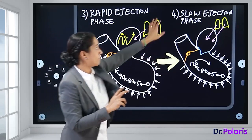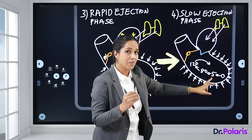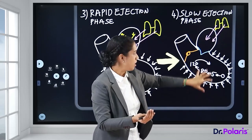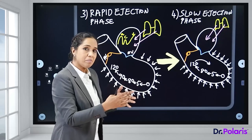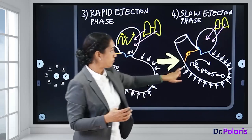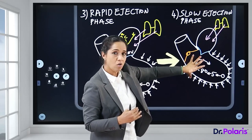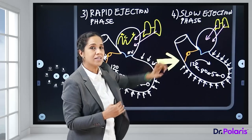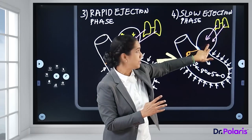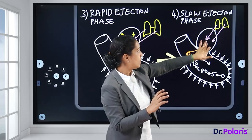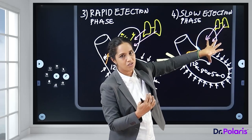Phase 4 — Slow Ejection Phase: The ventricle is still contracting (inward arrow), but the major contents have already been poured into the aorta during the rapid ejection phase. Ventricular pressure starts falling from 120 mmHg. Blood continues flowing into the aorta but at a slower pace. The atria continues in diastole, getting filled with oxygenated blood.